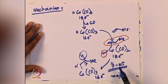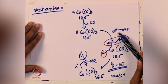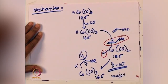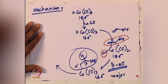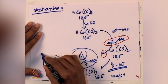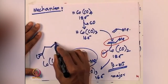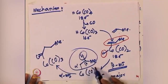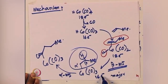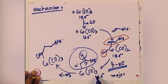So the electron count goes 18 → 16 via ligand dissociation, 16 → 18 via olefin coordination, 18 → 16 via beta migratory insertion — giving the major linear alkyl intermediate. Then alpha migratory insertion follows: the whole alkyl group migrates into one of the carbon monoxide ligands, forming the cobalt acyl intermediate. One CO has been incorporated. The 16-electron species is formed, and from there the interaction of hydrogen will complete the cycle to give the linear aldehyde product.